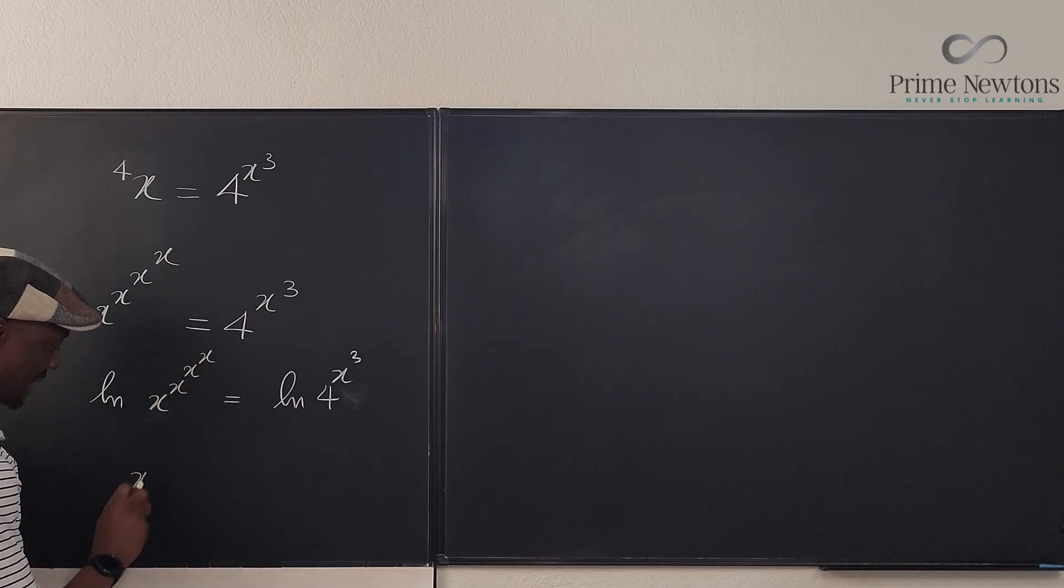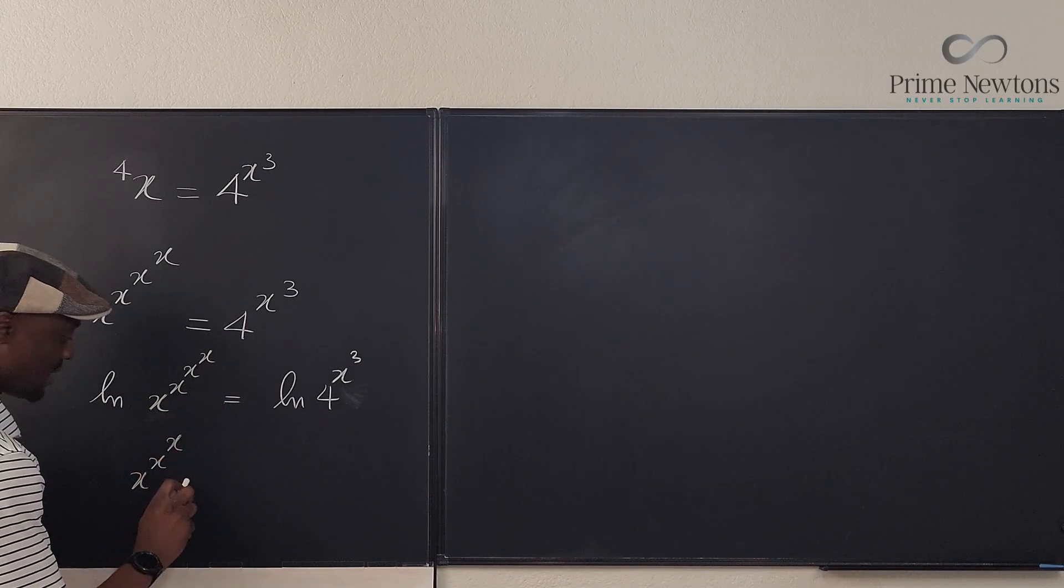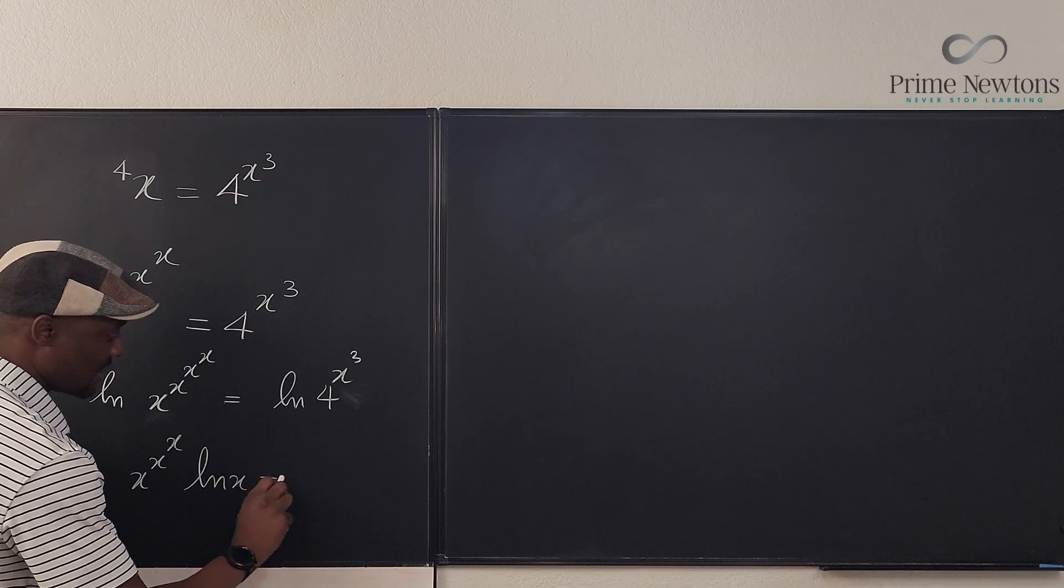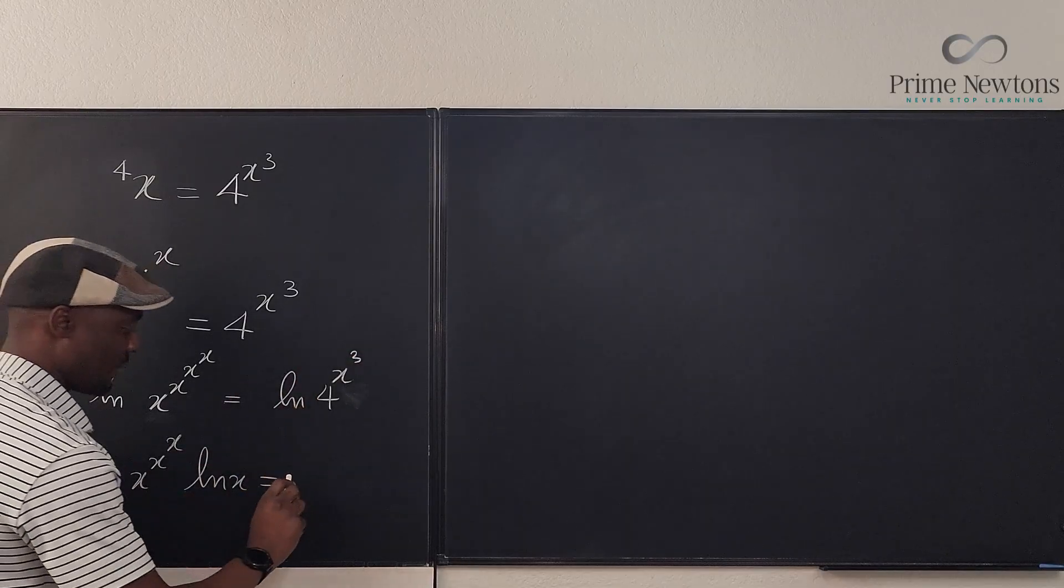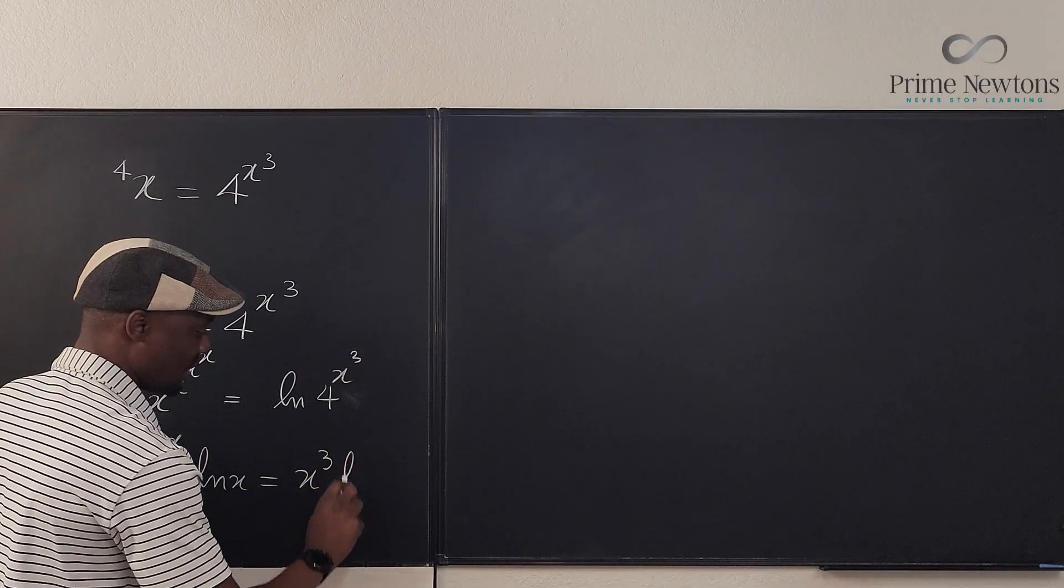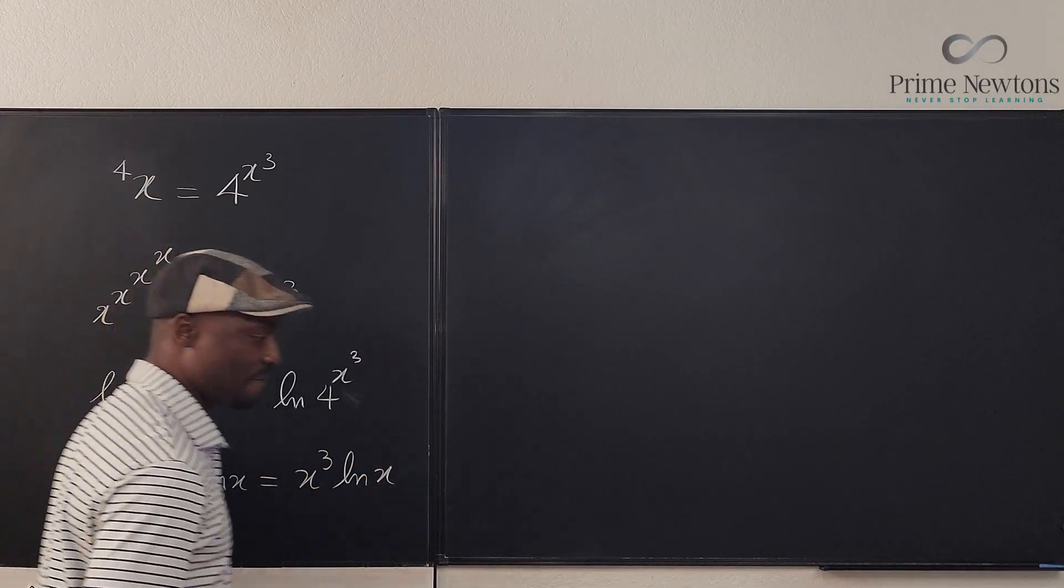Okay, so now I bring down all three of this: I have x to the x to the x natural log of x equals, if I bring this down, I'm gonna have x cubed times the natural log of x.